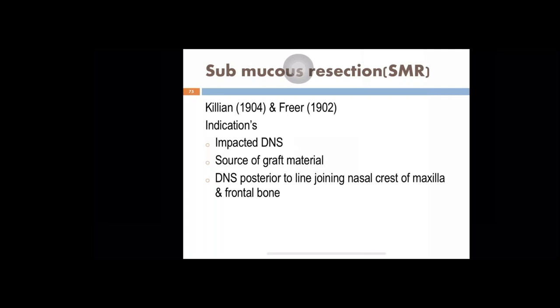Coming to submucous resection (SMR). Septoplasty is a conservative procedure that corrects only the deviated part. SMR is used for more complicated deviations — S-shaped deviation with a horizontal spur impinging on the lateral wall. In SMR, the entire septum is removed except for a dorsal strut and a columellar strut. SMR cannot be done in young individuals — less than 16 years of age — because of the growth spurt during adolescence, as removing the entire septum can lead to facial abnormalities.